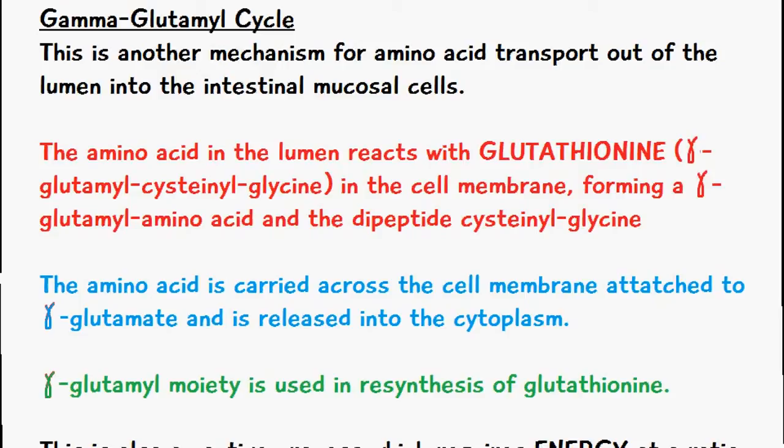The amino acid in the lumen reacts with glutathione, which is made up of gamma glutamyl cysteinyl glycine. This occurs in the cell membrane and it forms a gamma glutamyl amino acid complex and also the dipeptide cysteinyl glycine.